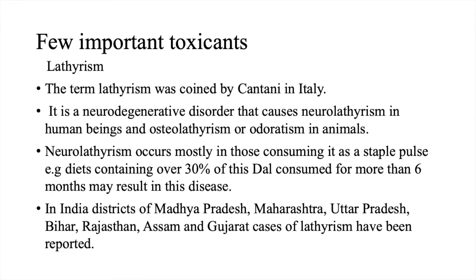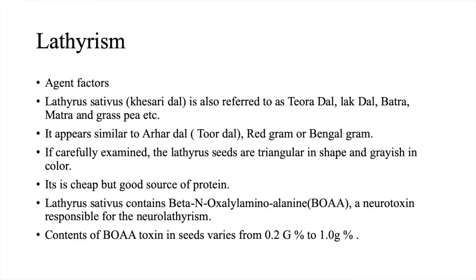The first one is lathyrism. The term lathyrism was coined by Cantonese in Italy. It is a neurodegenerative disorder that causes neurolathyrism in human beings and osteolathyrism or odoratism in animals. Neurolathyrism occurs mostly in those consuming it as a staple pulse — for example, diets containing over 30% of this dal consumed for more than six months may result in this disease. In India, few districts of Madhya Pradesh, Maharashtra, Uttar Pradesh, Bihar, Rajasthan, Assam, and Gujarat have reported cases of lathyrism. The agent is Lathyrus sativus, Khesari dal, also referred to as Tivra dal or Lakh dal, Batra, Matra, and Graspi.